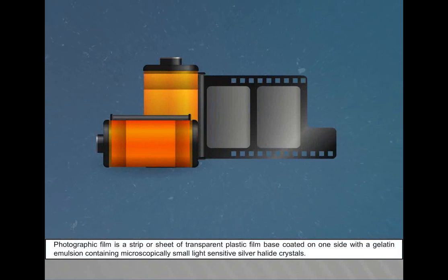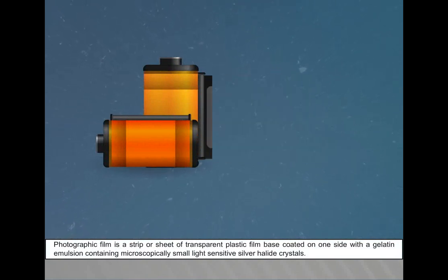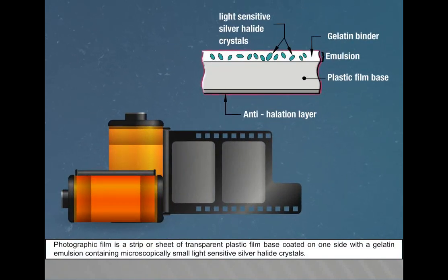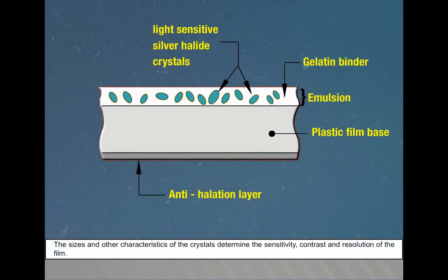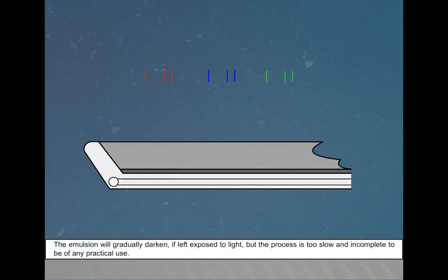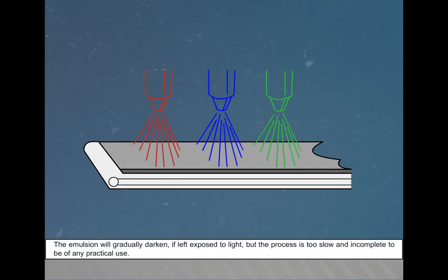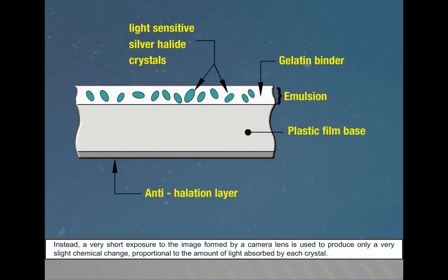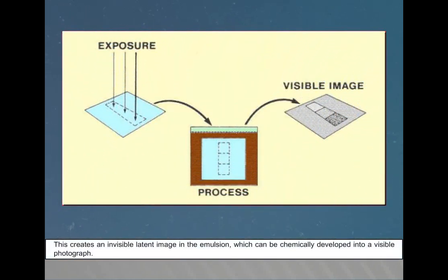Photographic film is a strip or sheet of transparent plastic film base coated on one side with a gelatin emulsion containing microscopically small light-sensitive silver halide crystals. The sizes and other characteristics of the crystals determine the sensitivity, contrast, and resolution of the film. The emulsion will gradually darken if left exposed to light, but the process is too slow and incomplete to be of any practical use. Instead, a very short exposure to the image formed by a camera lens is used to produce only a very slight chemical change proportional to the amount of light absorbed by each crystal. This creates an invisible latent image in the emulsion which can be chemically developed into a visible photograph.